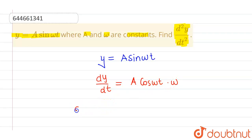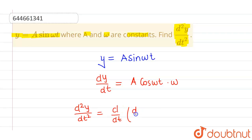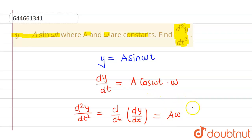Now further, d²y over dt² is nothing but the differentiation with respect to t of dy over dt. Since a·omega is constant, therefore a·omega into differentiation of cos omega t will be minus sine omega t, and differentiation of omega t will be omega.